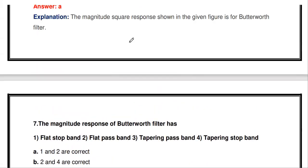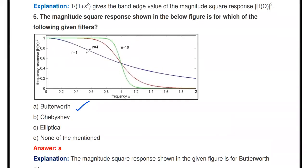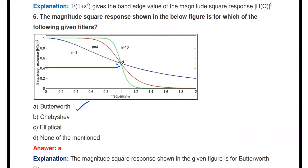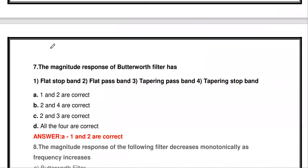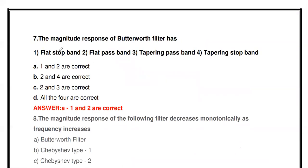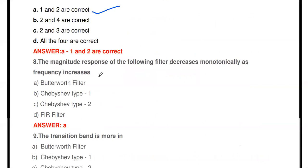The Butterworth filter has a flat passband as well as a flat stopband. So options 1 and 2 are the correct answer. The next question: the magnitude response of which filter decreases monotonically as the frequency increases? Answer: Butterworth filter. In a Butterworth filter, as frequency increases, the magnitude response decreases monotonically.